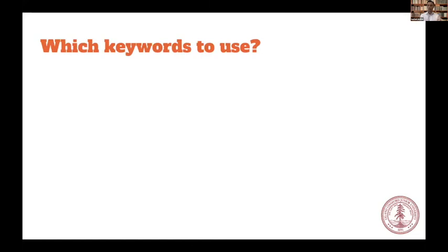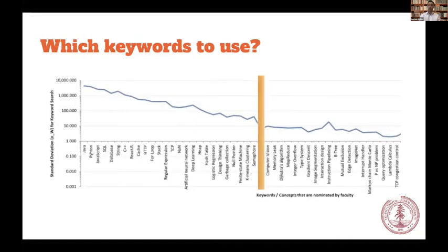What topics are we going to import from Google? We conducted a survey among faculty in our department and they nominated lots of important topics for computer science. We chose the most popular ones that allow us to have enough variance and covariance, and we analyzed those keywords.